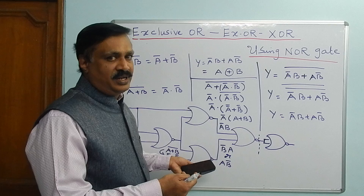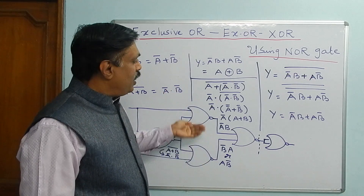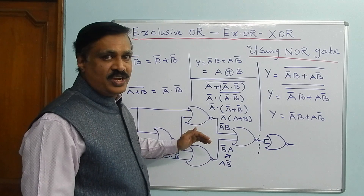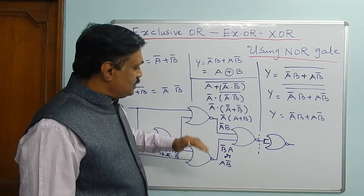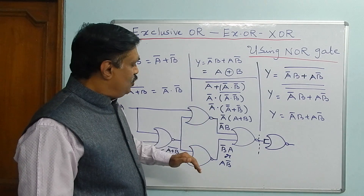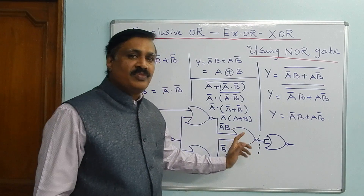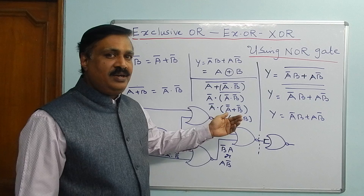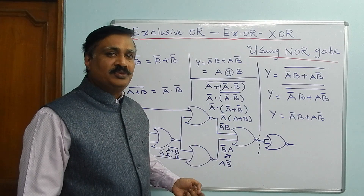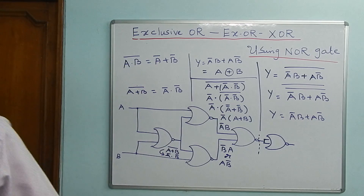This implementation using NOR gates is the reverse of the NAND gate implementation. If you compare the last lecture and this one, you can easily understand the difference between NOR gate and NAND gate implementations. This XOR circuit using NOR gates is used in the half adder and half subtractor. Thank you. If you have any doubt, please drop a comment.